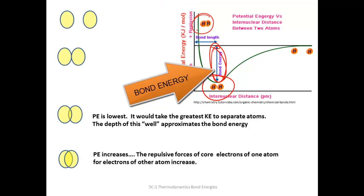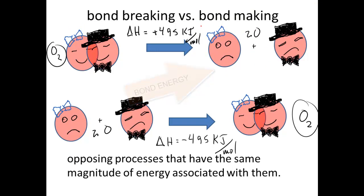By definition, it is important to understand that breaking a bond requires an input of energy. So the system, that bond, would have a positive change in enthalpy. So by definition, bond breaking is always a positive number. Bond breaking always requires an input of energy.